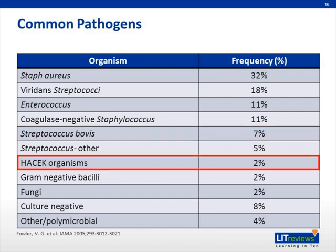The HACEK organisms include Haemophilus, Actinobacillus, Cardiobacterium, Eikenella, and Kingella. They were traditionally referred to as culture-negative, although they will actually grow in culture, but only with specific nutritional requirements.